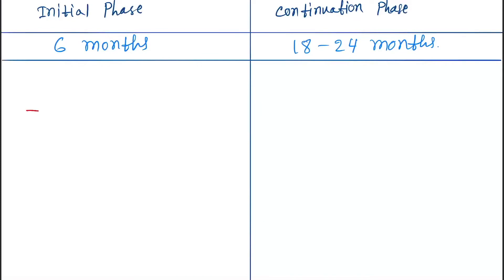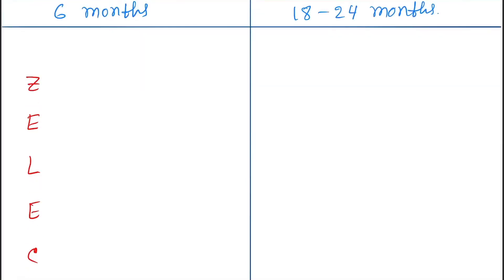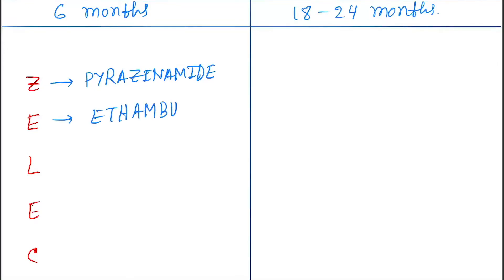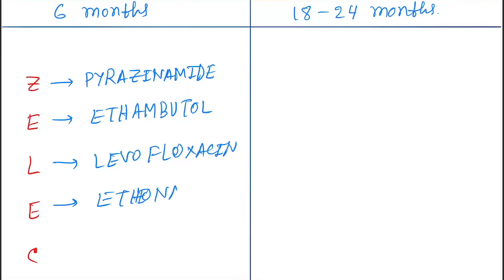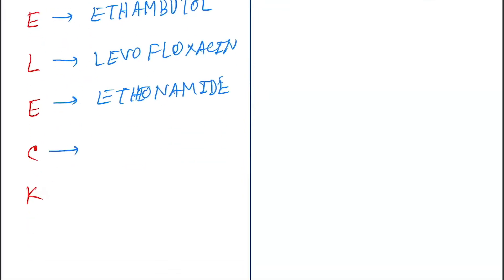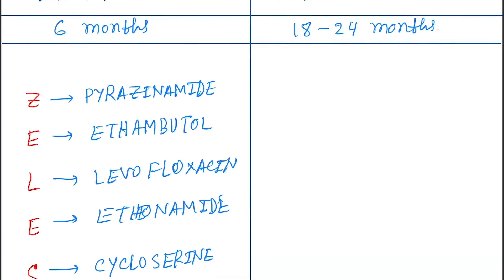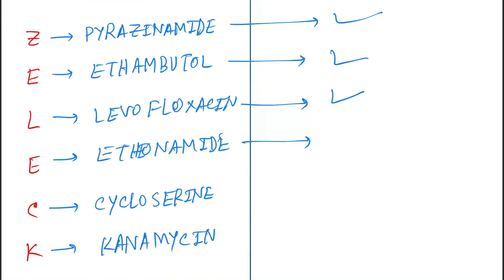For the initial phase of MDR-TB, remember the mnemonic ZELECK: Z for pyrazinamide, E for ethambutol, L for levofloxacin, E for ethionamide, C for cycloserine, and K for kanamycin.